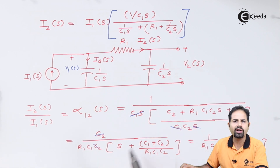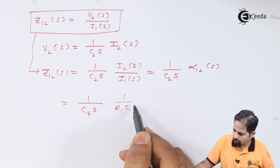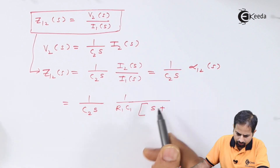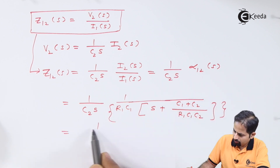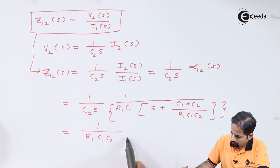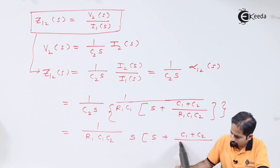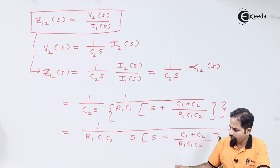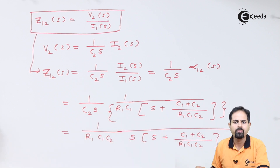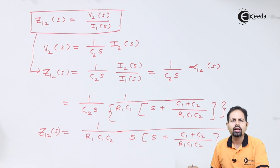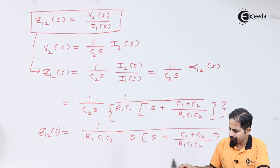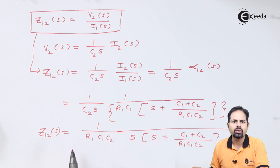Substituting α₁₂(s) = [1/(R1·C1)] / [s + (C1+C2)/(R1·C1·C2)], we obtain Z₁₂(s) = [1/(R1·C1·C2·s)] / [s + (C1+C2)/(R1·C1·C2)]. This is the required impedance transfer function Z₁₂(s). It can also be converted using the inverse Laplace transform to obtain the time-domain solution if required.